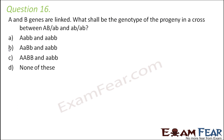A and B genes are linked. What shall be the genotype of the progeny in a cross between AB/ab and ab/ab? This representation means that capital A and capital B are linked together, and small a and small b are linked together. So capital A, capital B alleles are on one chromosome, and small a, small b alleles are on the other.